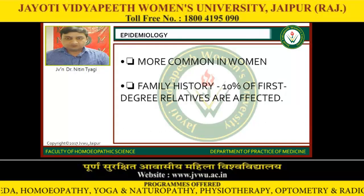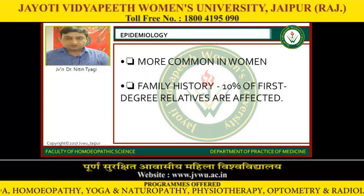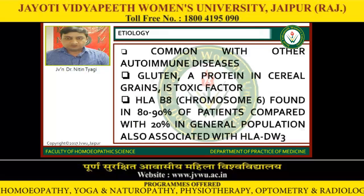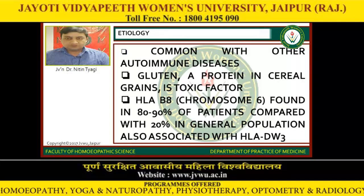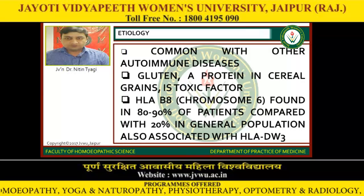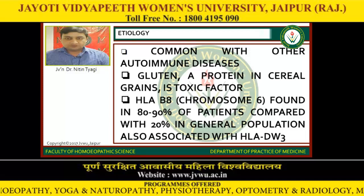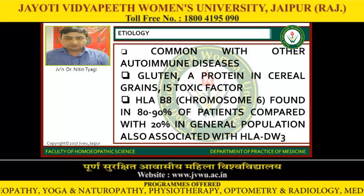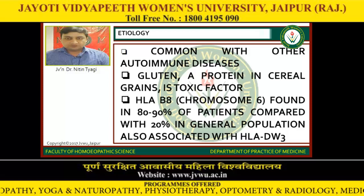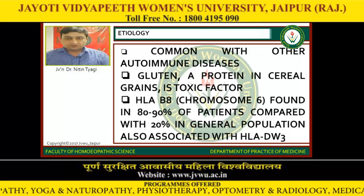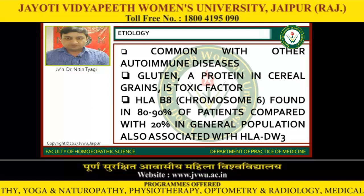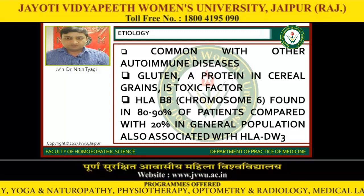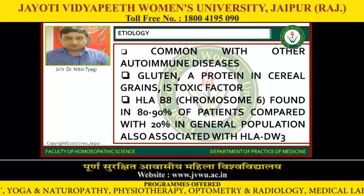Epidemiology: it is more common in women. There is a family history — 10% of first degree relatives are affected. Etiology: it is common with other autoimmune diseases. Gluten, a protein in cereal grains, is the toxic factor. HLA-B8 on chromosome 6 is found in 80-90% of patients compared with 20% in the general population. It is also associated with HLA-DW3.